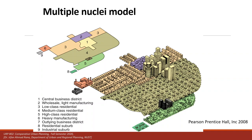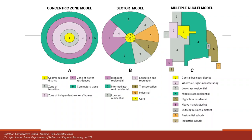Collectively, these three models — the Concentric Zone Model, the Sector Model, and the Multiple Nuclei Model — are called the North American models. They were predominantly based on the growth of cities in North America, and are called the North American land-use models of city development.